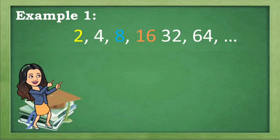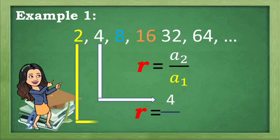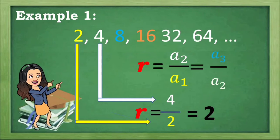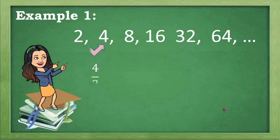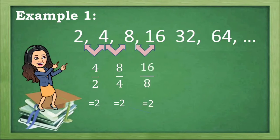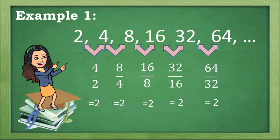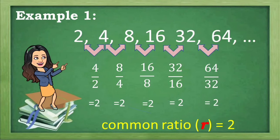Example: given the sequence 2, 4, 8, 16, 32, 64. To solve for R, that is equal to A sub 2 over A sub 1. Our second term is 4 and the first term is 2. What is 4 divided by 2? That is equal to 2, and that is the value of R. Let us check: dividing the second term by the first gives 2; the third by the second is still 2; fourth by the third equals 2; fifth by the fourth equals 2; and 64 divided by 32 is equal to 2. They all arrive on the same result, and the common ratio R is equal to 2.